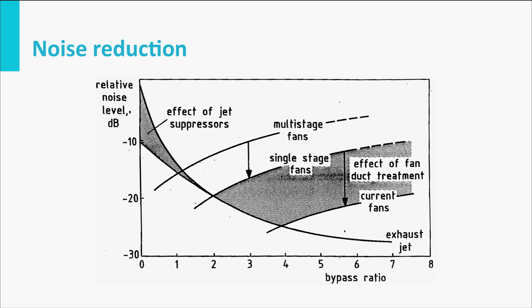There are more trends we have seen: engines have become much quieter. This is simply a result of the lower exhaust speed as well. The mixing of high exhaust speed with ambient air speed creates turbulence, which generates noise. A graph showing noise level on the y-axis and bypass ratio on the x-axis shows that bypass ratios of 5, 6, 7, and 8 — real numbers found today — have greatly reduced noise levels because air mixing is less turbulent.